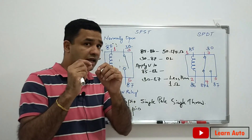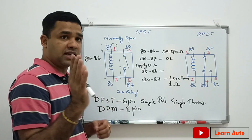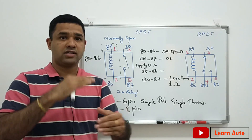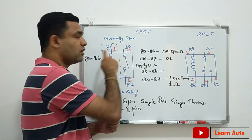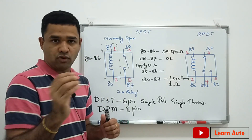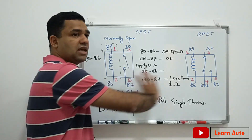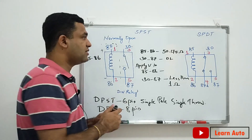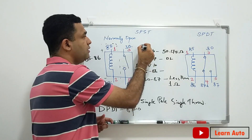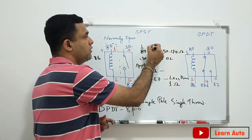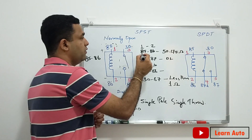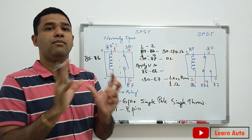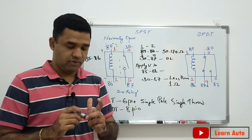For DIN relay, if you want to use pin numbers, you can use DIN or ISO numbering. In ISO, the pin numbers are 1, 2, 3, 4. In inspection using DIN numbering, you use pin numbers 1, 2, 3, 5. This is the main difference.